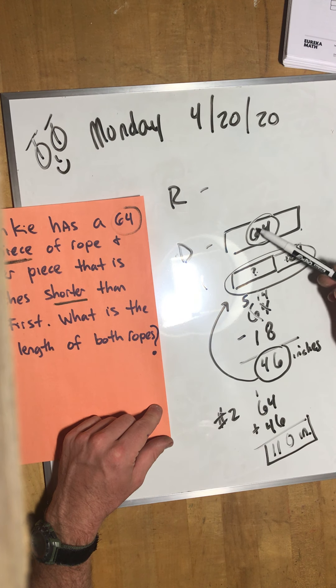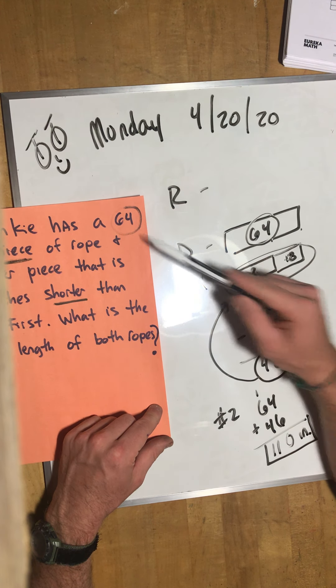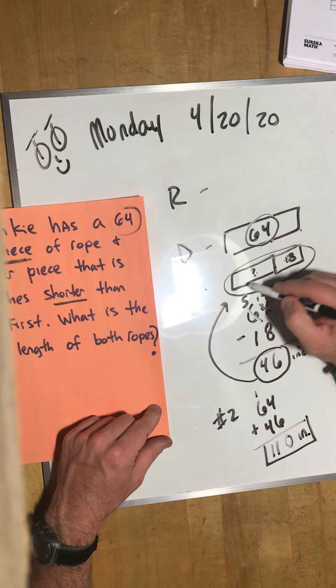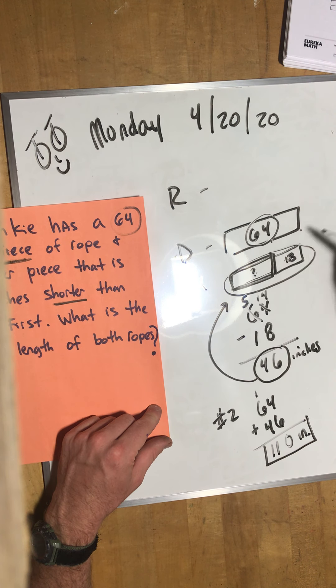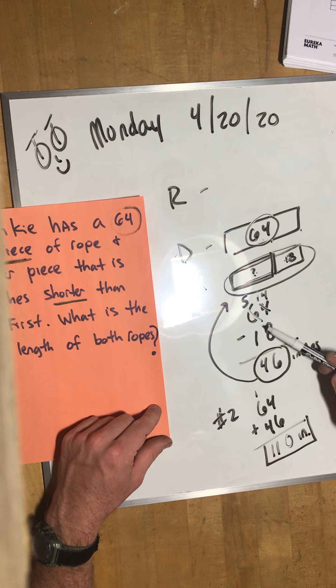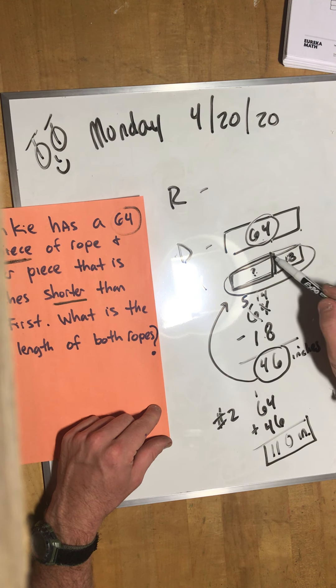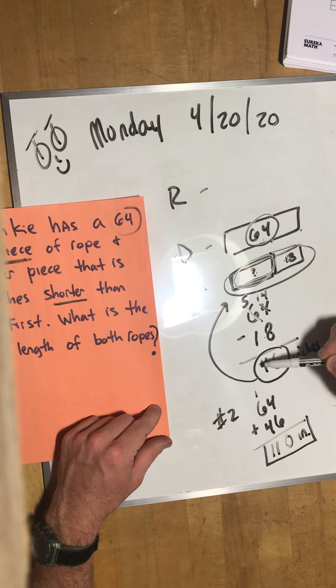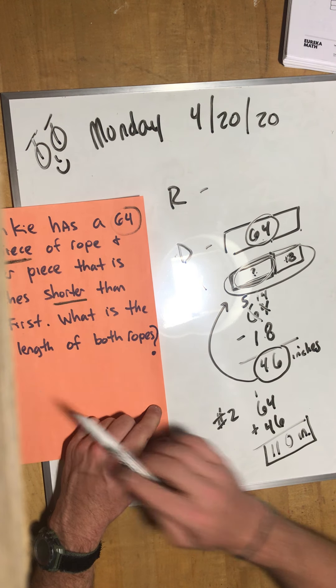Let's review a little bit. When we read the problem we knew that one of the pieces was 18 inches shorter than the first but we needed to know the total length of both ropes. So we figured out one was 64, that was in the problem. The other one was 18 inches shorter.